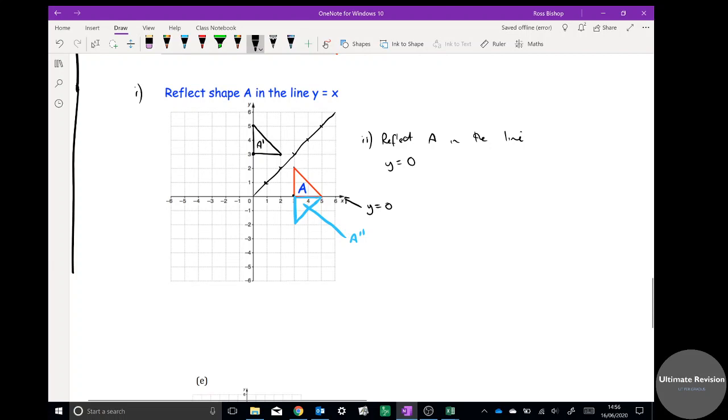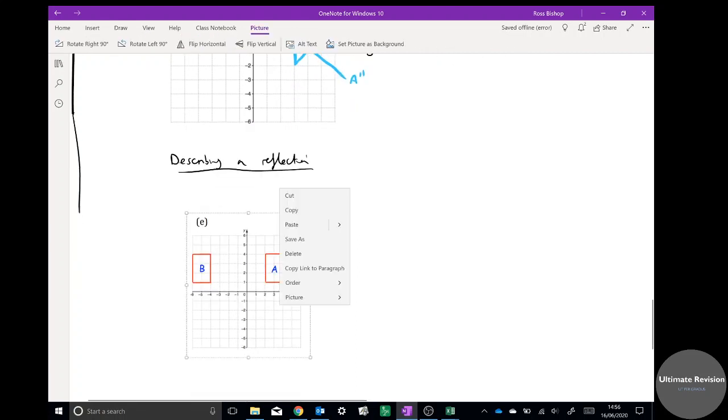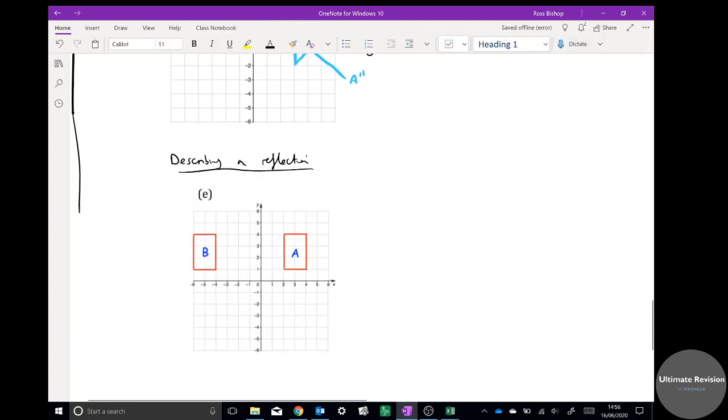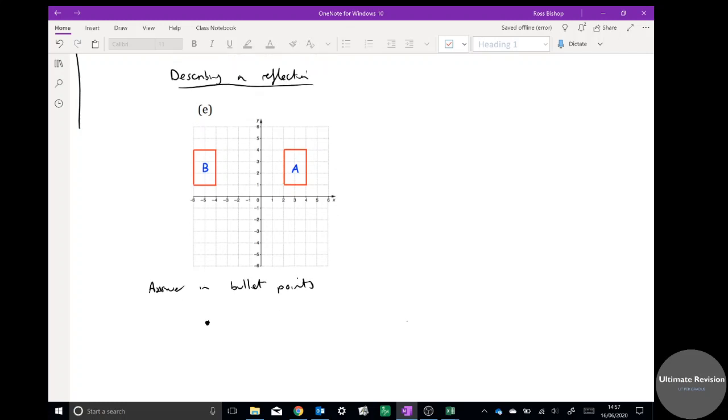Now you might also have to describe a reflection. Describing a reflection. This might say describe the reflection A to B. For these questions you must say what you do. You can answer in bullet points, we don't need full sentences. The first bullet point is always what are you doing. In later lessons we're going to do not just reflection, we're going to look at translation, rotations and enlargements, but this is clearly a reflection to get from A to B. It's a reflection, and you'd get one mark for just saying it's a reflection. And then you need to say what the mirror line is, so in the line.